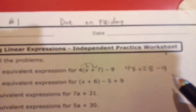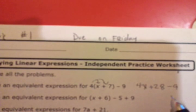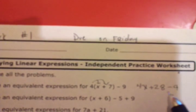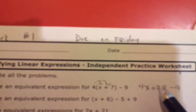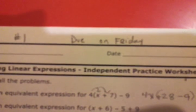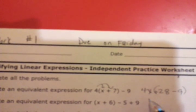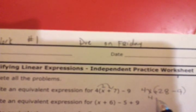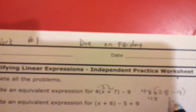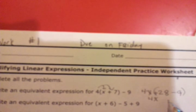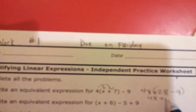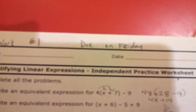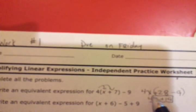Remember our rules for simplifying expressions. I can use the associative property and make my group. 4x comes down, and 28 minus 9 is positive 19. And there is my final answer.